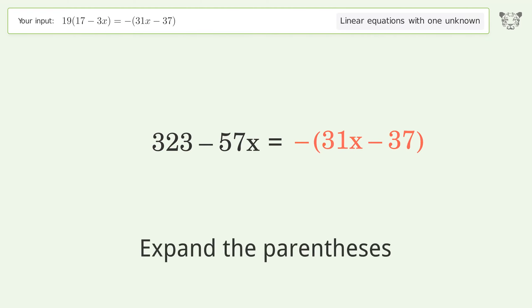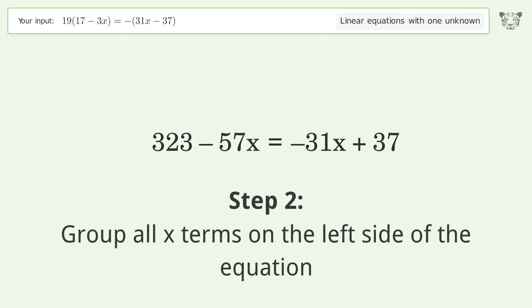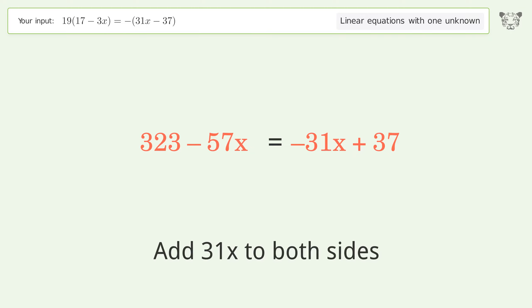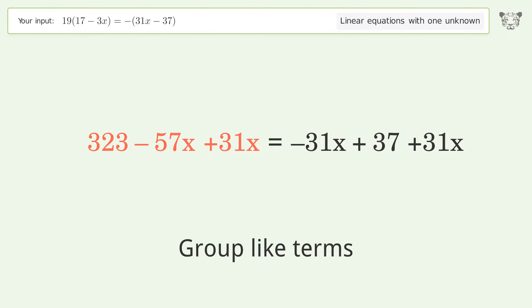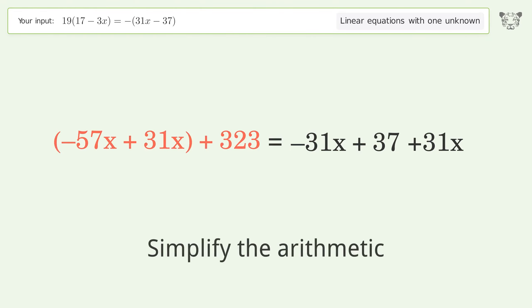Expand the parentheses. Group all x terms on the left side of the equation by adding 31x to both sides. Group like terms and simplify the arithmetic.